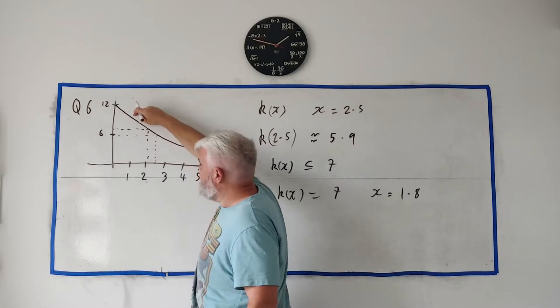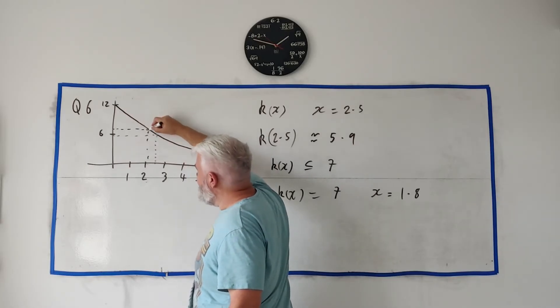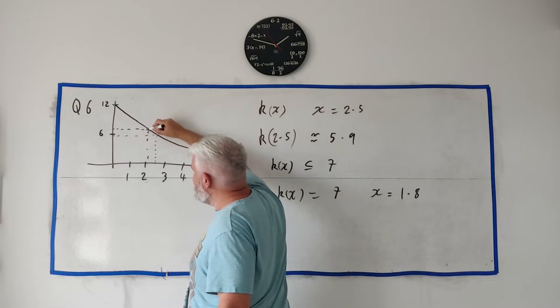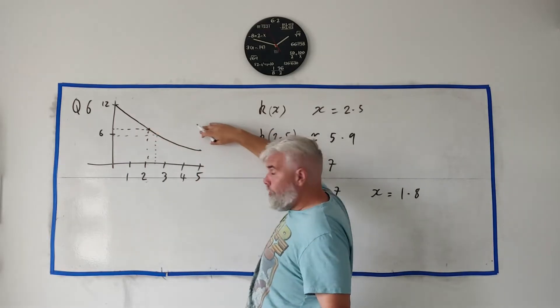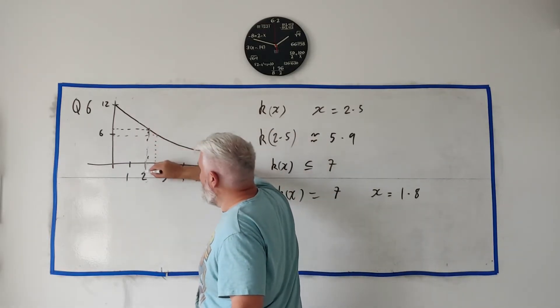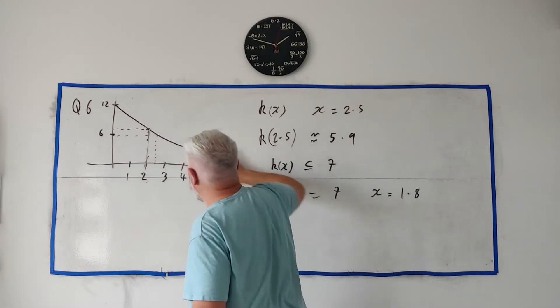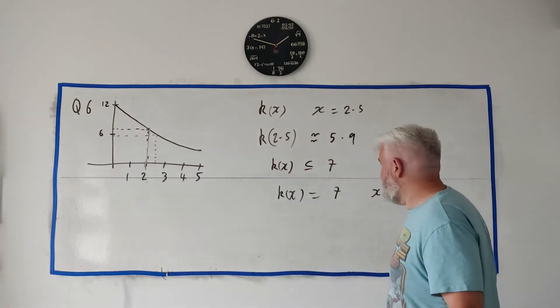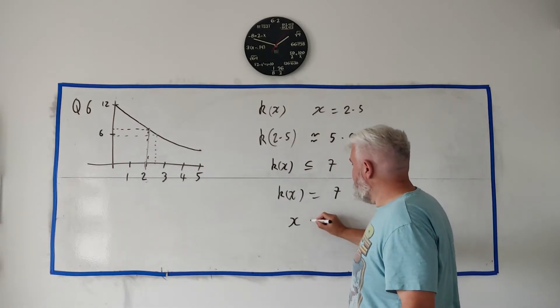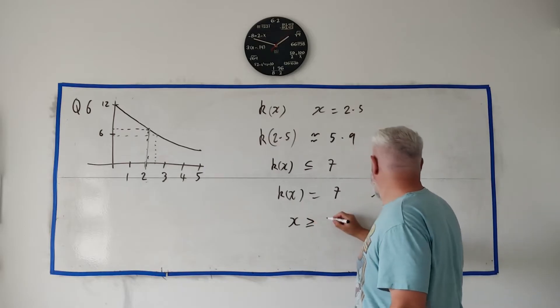But they wanted k(x) less than seven. So when is this line less than seven? It's twelve, it's eleven, ten, and so on. It's seven around here. It's less than seven everywhere over here, so everywhere past this point is less than seven.